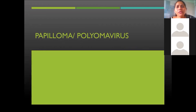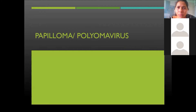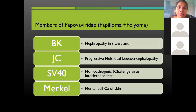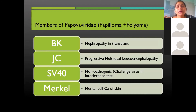The next non-enveloped virus, small in size and lying between Parvo and Adeno, is Papillomavirus. It has circular double-stranded DNA, around 50 nanometers in size. The family is Papovaviridae, which contains Papillomavirus and Polyomavirus.